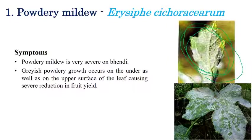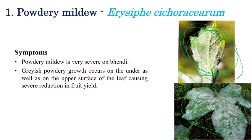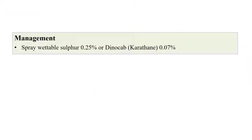As you can see in the image here, white color complete powdery growth can be observed on the upper surface as well as the lower surface of the leaves.